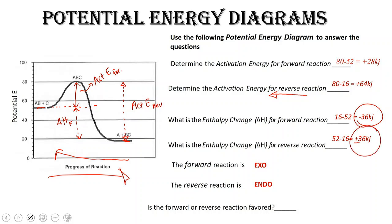Exothermic reactions are generally favored, meaning that reactions that release energy are more likely to be spontaneous and happen on their own — they are a more favored reaction. Whereas in a reaction where you have to dump a bunch of energy into it, that's not favorable. Everything in the universe wants to have the least amount of energy required for a process to occur. So the forward reaction is going to be favored because it is an exothermic reaction.